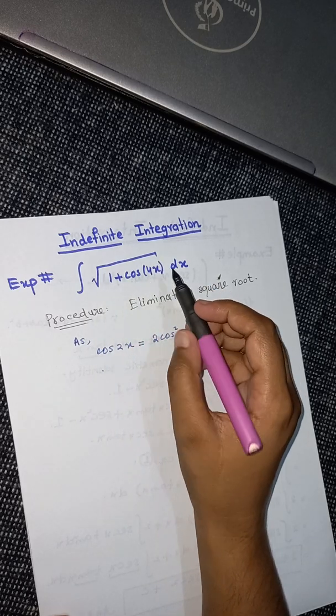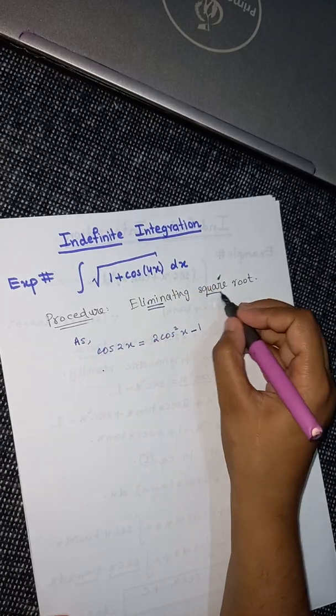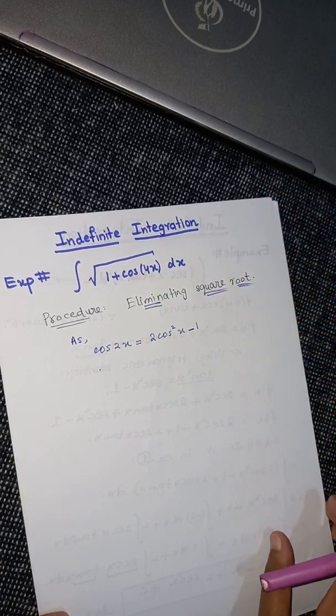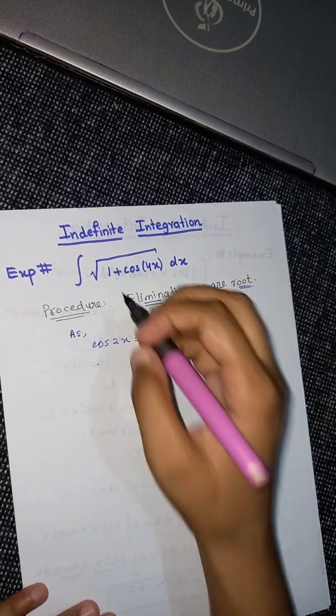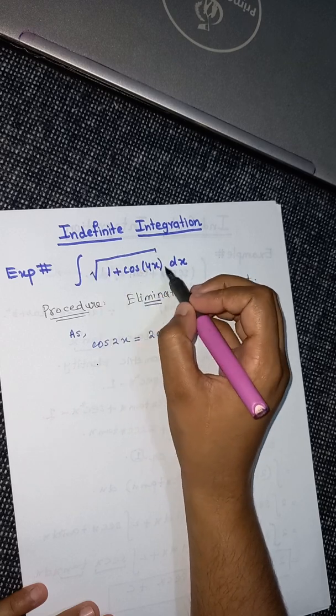The procedure here involved is by eliminating square root. We have no particular formula to evaluate this function's integration, so when this kind of situation occurs, the procedure involves eliminating the square root.